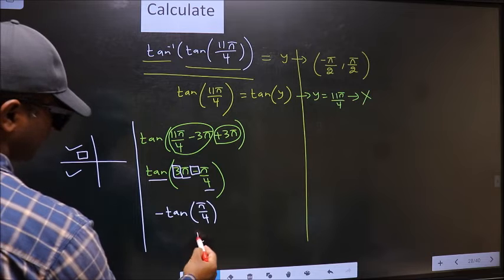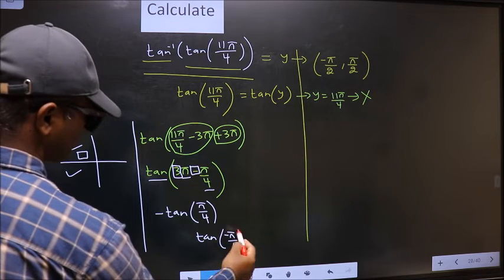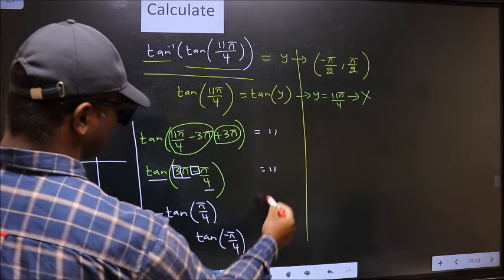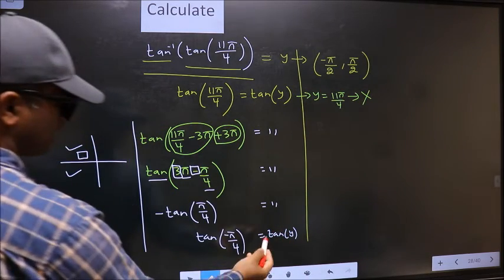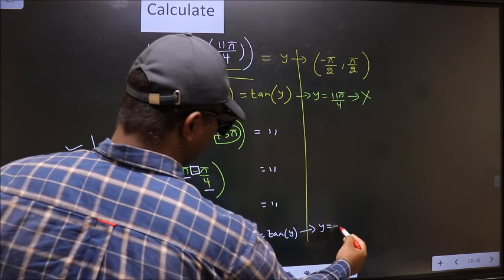Now shift negative inside. We get tan negative π by 4. Now on the other side no change. Equal to tan Y. Now comparing both sides we get Y to be minus π by 4.